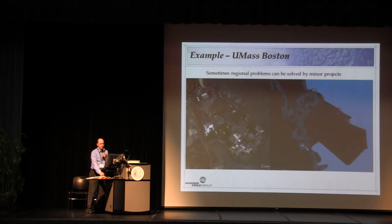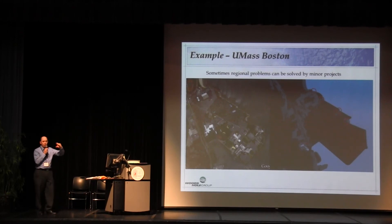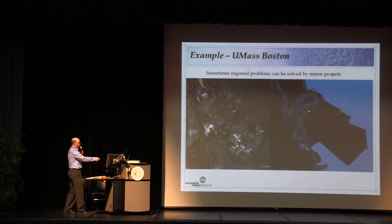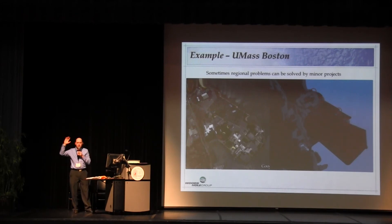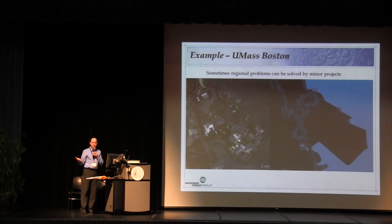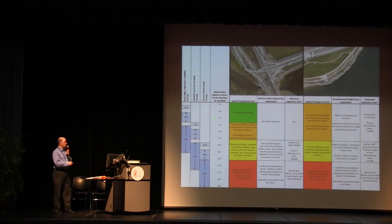The last thing I want to say is that using these results, you can sometimes solve regional problems with minor projects. This is something we looked at for the Morrissey Boulevard area — you can see these red circles where flood waters were entering. All of Morrissey Boulevard was flooding, but there was really only one area where the water was coming in. So as opposed to building a big sea wall around the entire area, you can buy a lot of time by just doing some small projects to protect your system. And using that same risk profile, you can then know when to implement your solution as well.